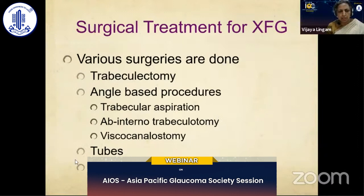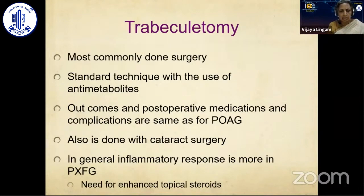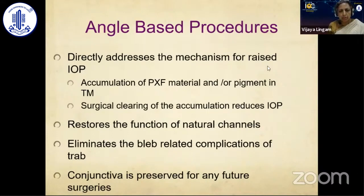Coming to surgery, various procedures have been tried: trabeculectomy, angle-based procedures to address exfoliation deposits in the angle, and there is very limited data on tube shunts. Trabeculectomy is still the most commonly performed surgery, done as a standard procedure. When significant cataract is associated, a combined procedure is preferred. These eyes are prone to significant inflammation, so enhanced topical steroids are very important. Angle-based surgery addresses the mechanism of raised IOP, restores normal channel function, and preserves the conjunctiva for future surgeries.